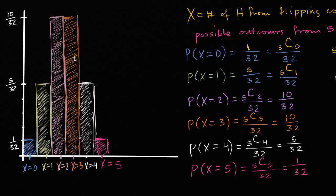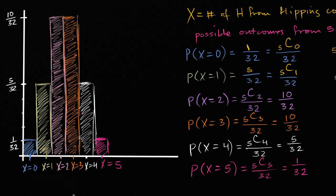When you visually show this probability distribution, it's important to realize this is a discrete probability distribution — this is a discrete random variable. It can only take on a finite number of values. I should say it's a finite discrete random variable. You could have something discrete that in theory takes on an infinite number of values, but this one is discrete in that it takes on particular values — it can't take on any value in between — and it's finite: x equals zero, one, two, three, four, or five.